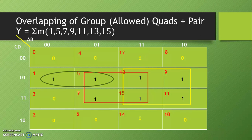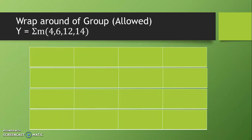So this type of overlapping is allowed. We take another example for wrap around. Wrap around of the group is allowed. We can wrap around the bottom and top row as well as the leftmost and rightmost column. Boolean function given is summation m(4, 6, 12, 14).